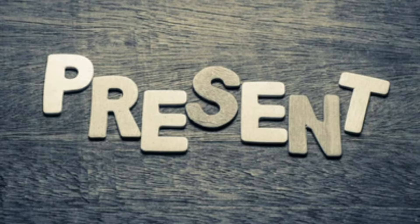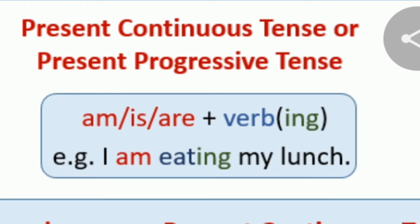Now, present tense shows the present time of an action. Each tense has its own rules. For simple present tense: if the subject is third person singular — he, she, it, or any other singular subject like Rama or Sita — we add -s or -es or -ies to the verb. For first person, second person, or any plural subject, we do not add -s or -es.